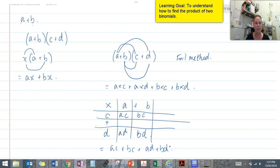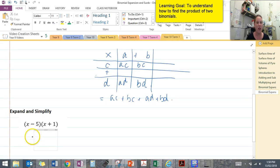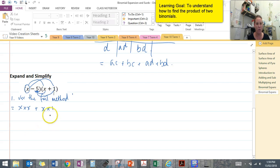Let's have a look at an example. So you can see here we have our example of x minus 5 times x plus 1. So I'm going to use my FOIL method here. So we're going to multiply our x by everything in this bracket. So x times x and x times 1. So we're going to do x times x plus x times 1. And then we're going to multiply everything by negative 5. So negative 5 times x and negative 5 times 1.